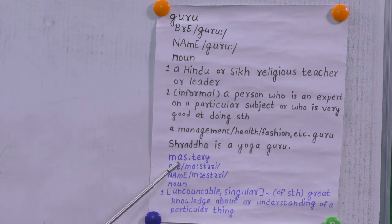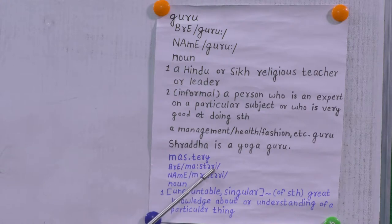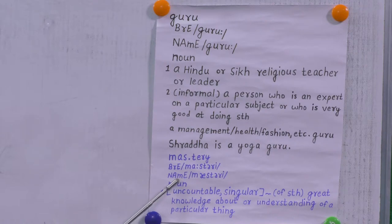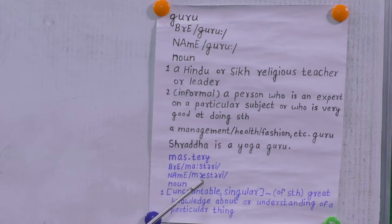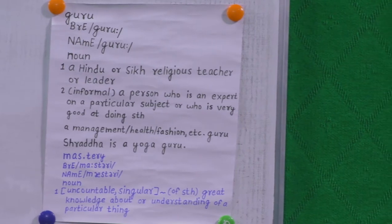The next word is M-A-S-T-E-R-Y (mastery). Nepali people might say 'mastery,' but looking at the phonemic transcription, British people pronounce it 'mastery.' North American people pronounce it slightly differently — 'mastery' — because Americans also pronounce the R sound, which British people do not. For example: British say 'first,' while Americans say 'first' with the R sound. Practice: British — 'mastery'; North American — 'mastery.'